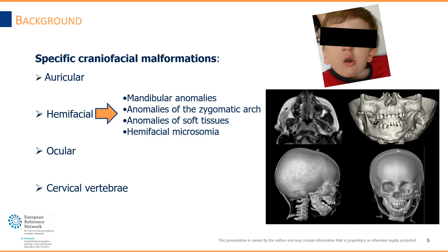Aural anomalies can be associated to hemifacial anomalies. In these patients, what can be observed is an asymmetry between the right and left parts of the face — hemifacial microsomia — which can be determined by bone or soft tissue anomalies. For example, the mandibular arch or zygomatic arch can be abnormal, or fat or muscular tissues can be missing or hypoplastic.